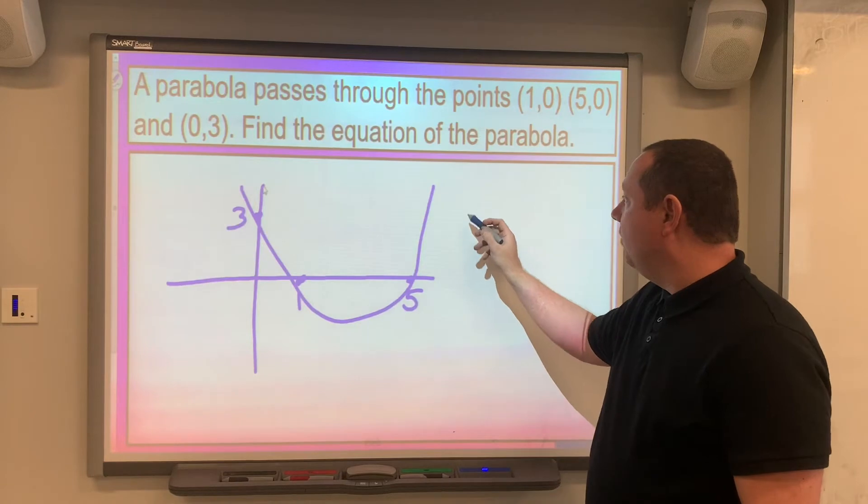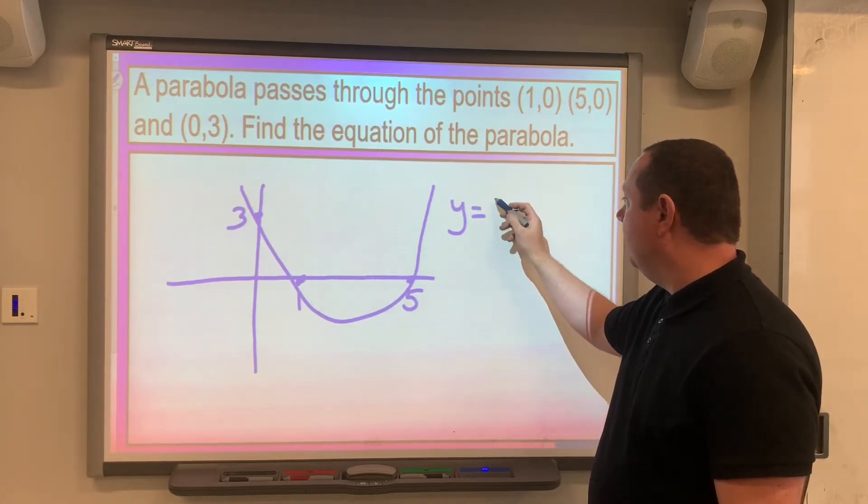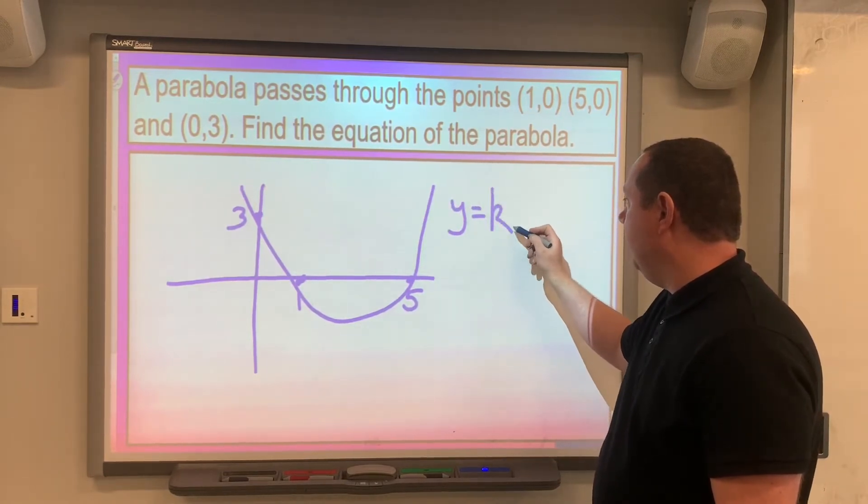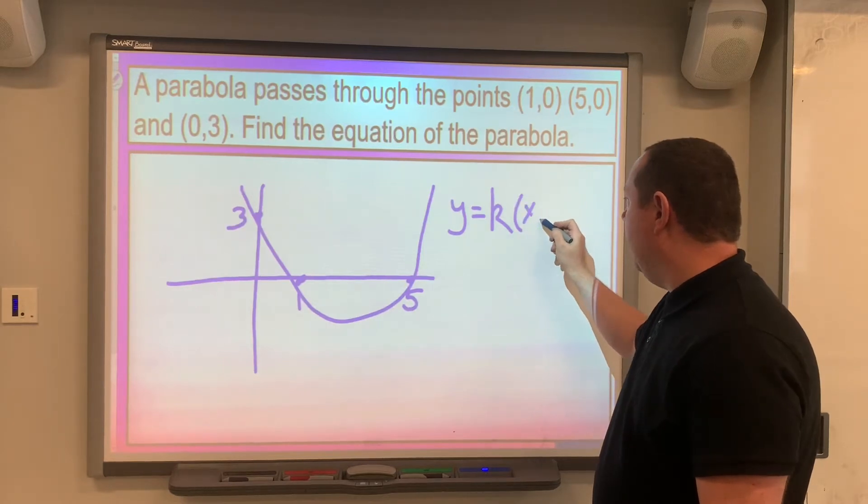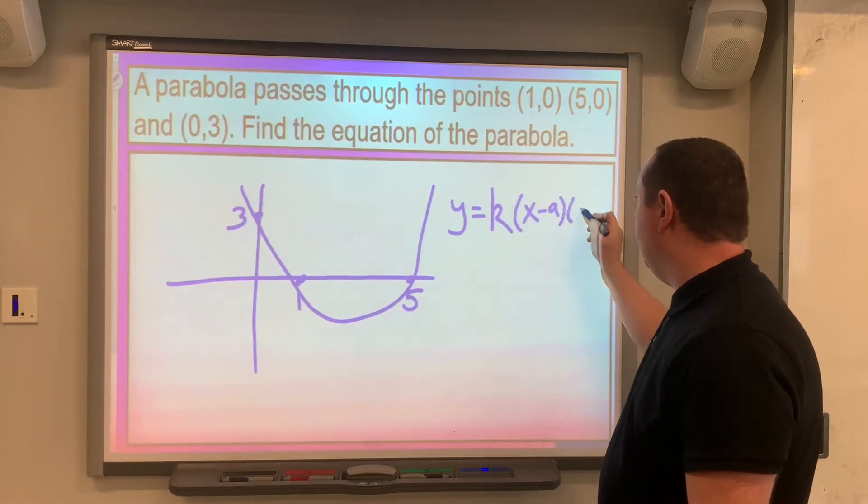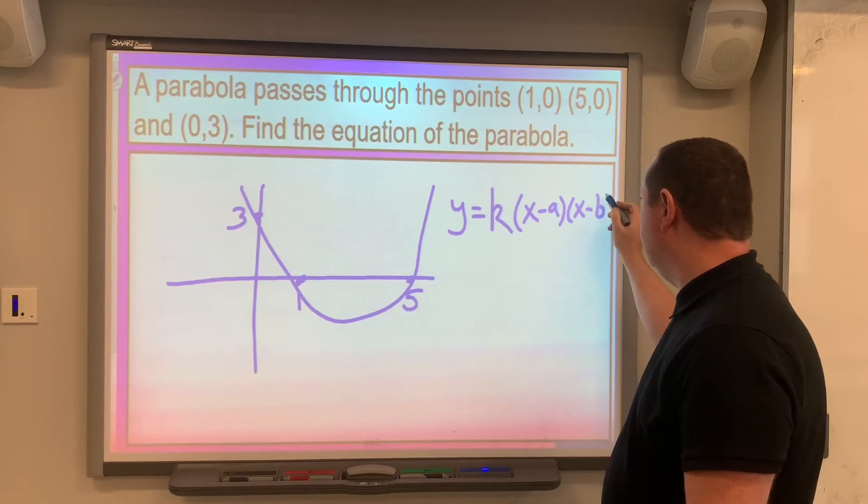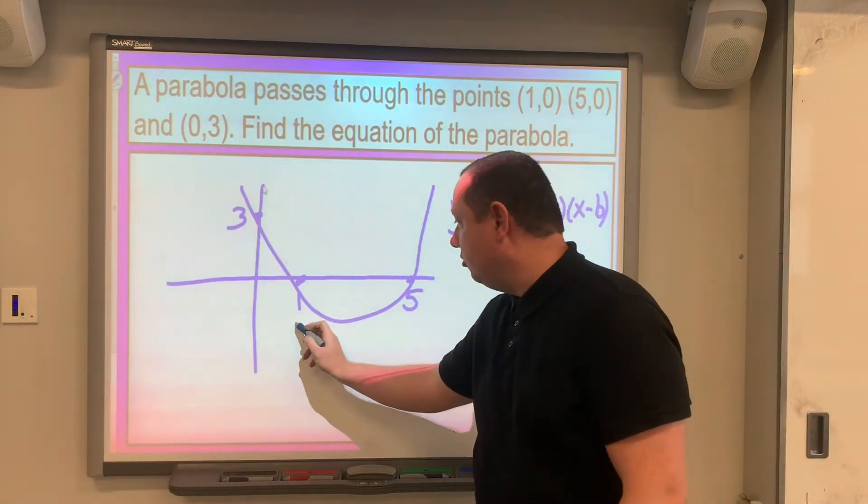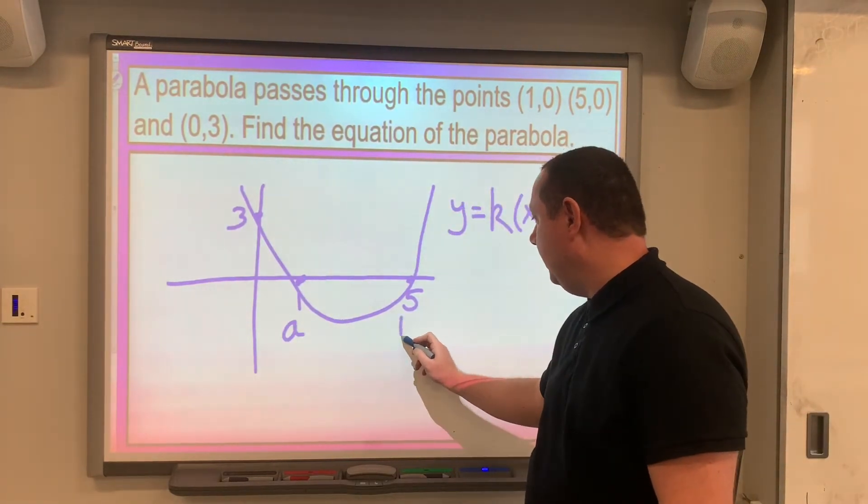From the previous slide we know that if we have the equation of the parabola it would be y equals k times (x minus a)(x minus b), and a and b are just the roots. So there's a and there's b.